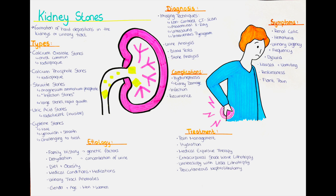Abdominal X-rays can help to identify larger stones but may not detect smaller stones or stones composed of substances that are not radio-opaque. Ultrasound is another imaging technique that we can use to create images of the kidneys and urinary tract. It is often used in situations where CT scanning is not preferred or when assessing pregnant individuals or children. Another imaging technique is the intravenous pyelogram. This is a dye-based imaging test that involves injecting a contrast agent into a vein. The contrast material helps to visualize the urinary tract and to identify any obstructions or abnormalities. IVP is less commonly used today, with CT scans being the preferred imaging modality.